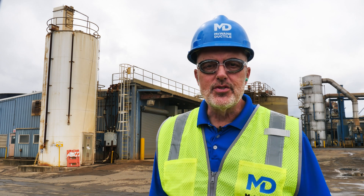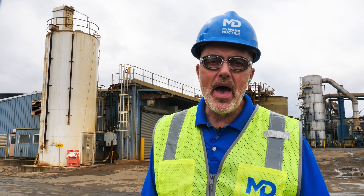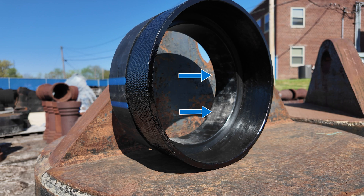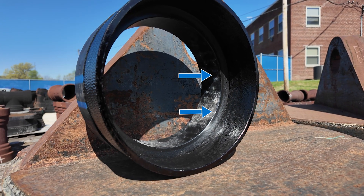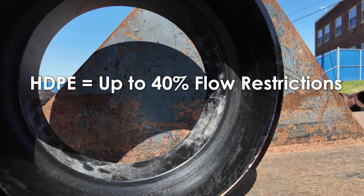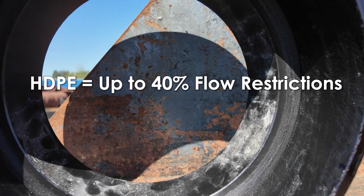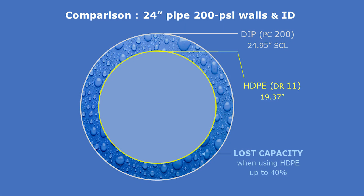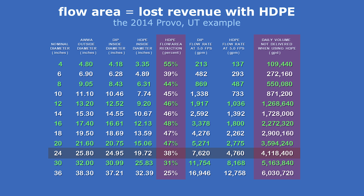Another area to consider is the operating cost of a given pipeline. Size does matter when comparing products, best represented by demonstrating the inside diameter of ductile iron pipe versus HDPE. Ductile iron pipe has a larger inside diameter than HDPE, allowing for a less restrictive flow as opposed to the smaller inside diameter of polyethylene, which causes flow restriction of up to 40 percent and adds pumping costs to convey water through the system. Typical flow comparisons dictate that polyethylene must be upsized when compared to ductile iron pipe to achieve the flow rate required by the project design.